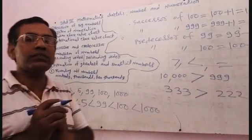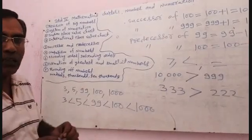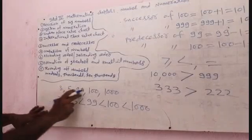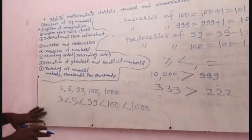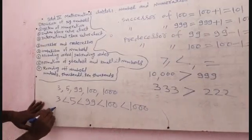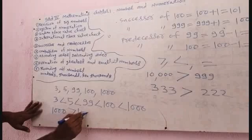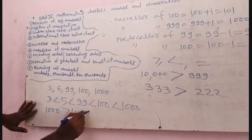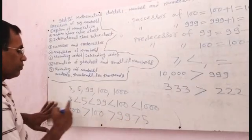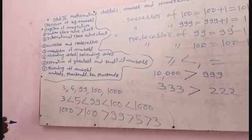Descending order means you write the bigger number first, then smaller, then smaller. So arrange the same numbers in descending order — do the opposite: 1000, then 100, then 99, then 5, then 3. This is descending order.